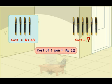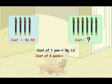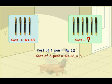We know the value of 1 and we need to find the value of many. So do you remember what we do in such cases? Yes, we multiply. So what is the cost of 6 pens? It is the cost of 1 pen into 6, that is Rs.12 into 6. 12 into 6 is 72, so the cost of 6 pens is Rs.72.